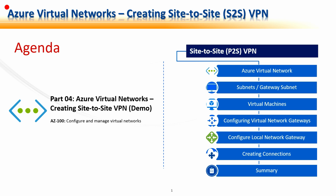This is Part 4 of the Azure Virtual Network Series: Creating Site-to-Site VPN. In this session, we are going to learn about what a Site-to-Site VPN is and its applicability. Like the previous session, Part 3 of the Azure Virtual Network Series on Point-to-Site VPN, here also we will be creating the virtual network, subnets and gateway subnets, virtual machines and virtual network gateways. But additionally, we are going to configure the local network gateway, which will define our on-premises network and create the connections which will bind both the virtual network gateways for Azure and the local network gateways that define the on-premises network.